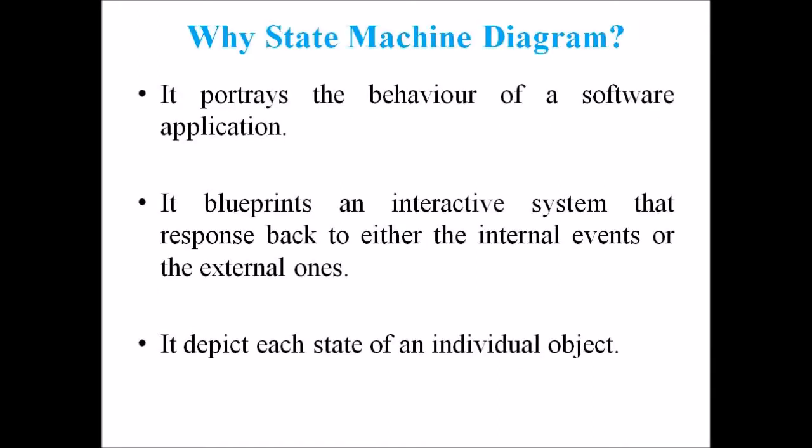Next we are discussing why we use a State Diagram or State Machine Diagram. Since this diagram records the dynamic view of a system, it portrays the behavior of a software application. During a lifespan, an object undergoes several states that exist until the program is executed. Each state depicts some useful information about the object. The diagram blueprints an interactive system that responds to either internal or external events. The execution flow from one state to another is represented by a State Machine Diagram. It visualizes an object's state from its creation to its termination, and depicts each state of an individual object. The diagram represents an interactive system and records the dynamic behavior of the system.